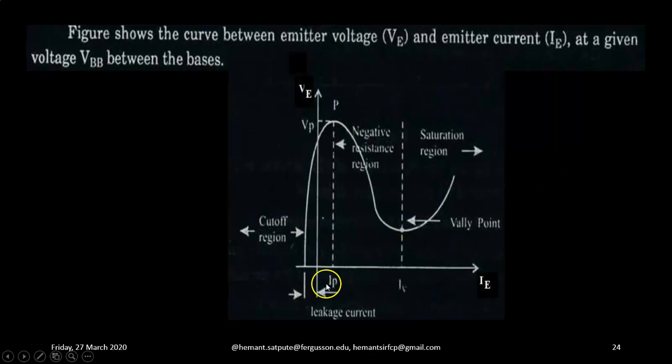So this is the graph. It is showing three regions: cutoff region, negative resistance region and saturation region. It is also showing two points, one is peak point and another is called valley point. Let us discuss all these step by step.